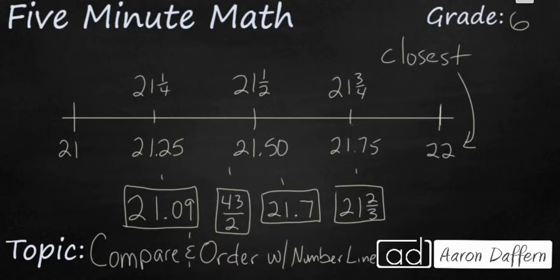So now that we have some demarcations that we can use on our number line, we can start putting these decimals in place. So we have our 21.09, or 21 and nine hundredths. Well, this is 21 and twenty-five hundredths right here. So this is probably going to be somewhere around here. I have a feeling that's going to be the farthest away from 22.